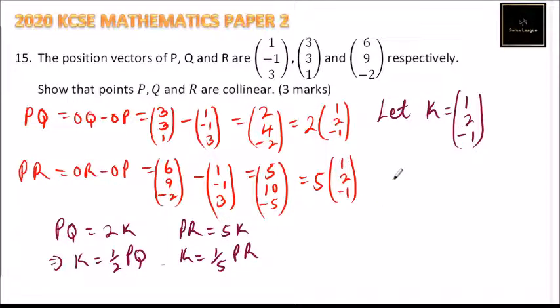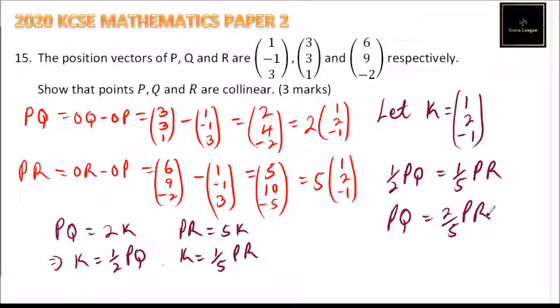Now we can equate the K. So we come and say 1/2 PQ equals 1/5 PR. So with that, we can say the three points are collinear because we have managed to express PQ in terms of PR - that is, all the three points are appearing. Or you can multiply both sides by 2 and say PQ equals 2/5 PR. So once you are able to express one vector in terms of the other, a scalar multiple of the other, then the three points are collinear, and that is how you go about it. This you learn in vectors 2 in form 3.